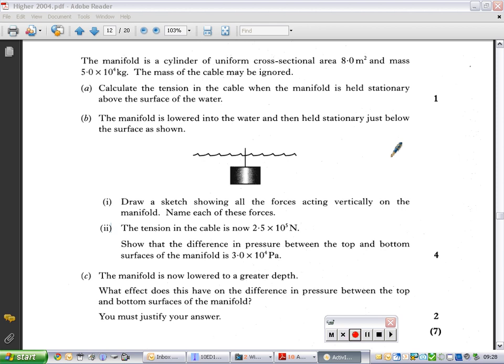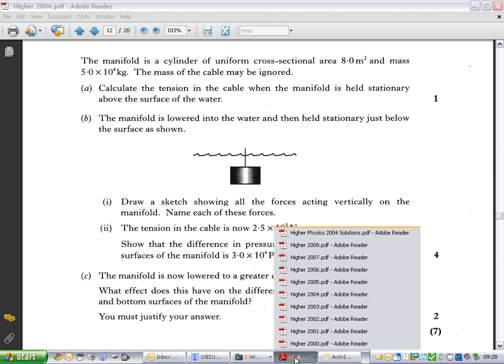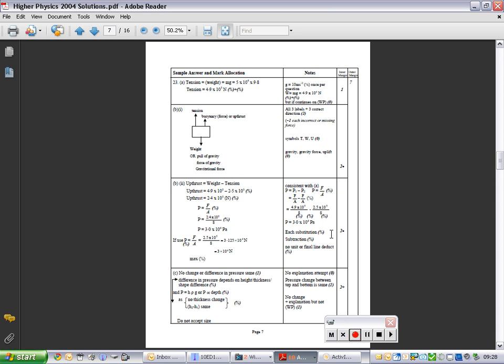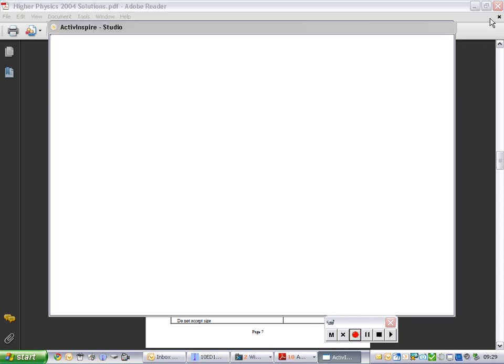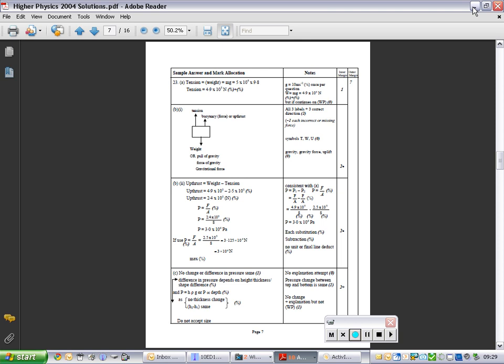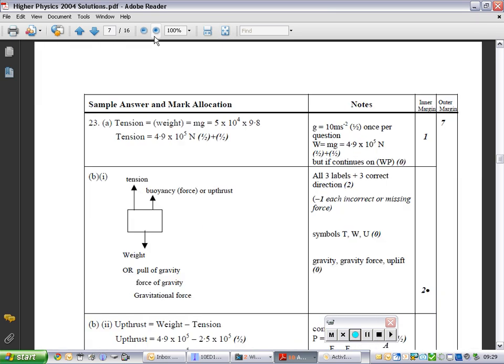Okay. So, it's 2004. Let's quickly have a look at these solutions. So, here we have the first bit. The tension equals the weight. So, equals 5 times 10 to 4 times 9.8, equals 4.9 times 10 to 5 newtons. One mark for that. Give yourself a tick for that if you got it.